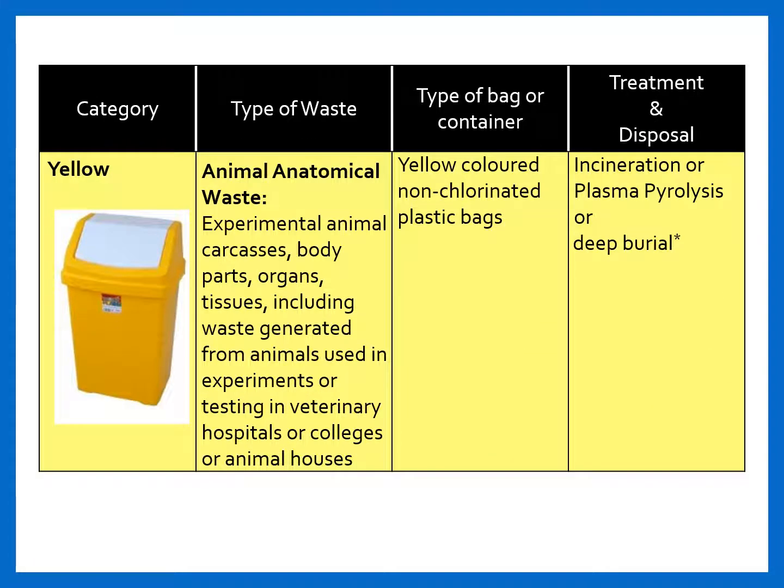Next comes animal anatomical waste — mainly experimental animal carcasses, body parts, organs, and tissues, including waste generated from animals used in experiments or testing in veterinary hospitals, colleges, or animal houses. The same yellow colored non-chlorinated plastic bags are used, and the treatment and disposal is by incineration or plasma pyrolysis.